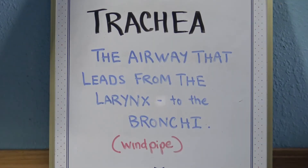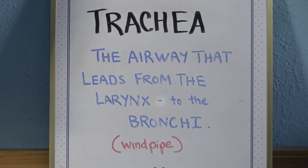Trachea — the trachea is the airway that leads from the larynx to the bronchi. It's like the windpipe between the lungs and your voice box.